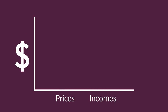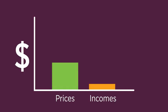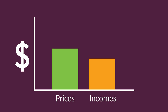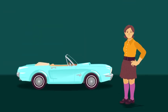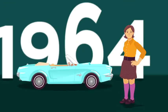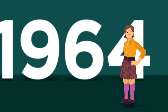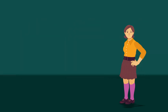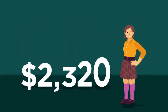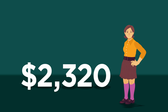However, it's important to understand that even though prices have risen over time, so have incomes. In reality, most high school students in 1964 didn't drive a 1964 Mustang because, even though the $2,320 price sounds low, students earned only $1.25 an hour — probably not enough to purchase a new car.